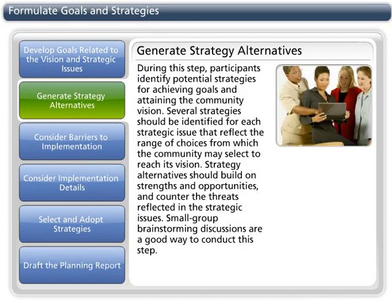During this step, participants identify potential strategies for achieving goals and attaining the community vision. Several strategies should be identified for each strategic issue that reflect the range of choices from which the community may select to reach its vision. Strategy alternatives should build on strengths and opportunities and counter the threats reflected in the strategic issues. Small group brainstorming sessions are a good way to conduct this step.